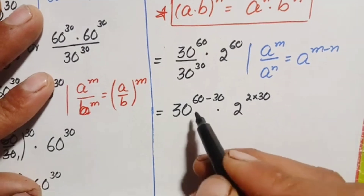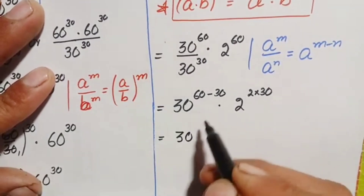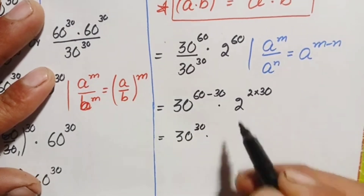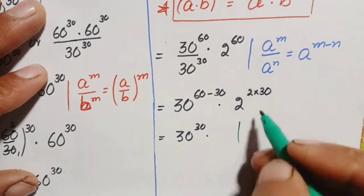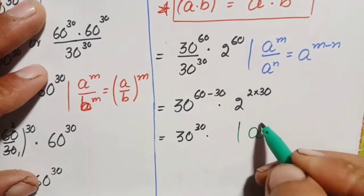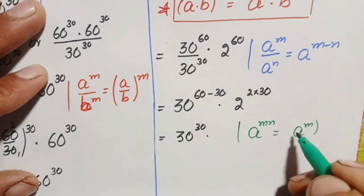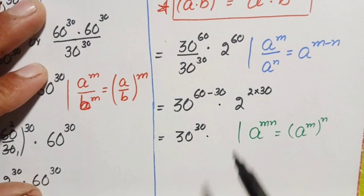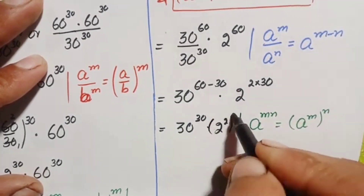So we have 30 raised to power 30, times 2 raised to power 2 times 30. We apply the identity: a raised to power m times n equals a raised to power m, all raised to power n. So 2 raised to power 2 times 30 becomes 2 raised to power 2, all raised to power 30.